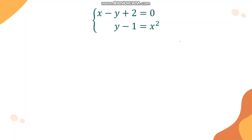For our next example, we have x minus y plus 2 equals 0 and y minus 1 equals x squared. We again have a linear and a quadratic equation, and we will use substitution. Looking at the two equations, it is easier to use equation 2: y minus 1 equals x squared. Moving negative 1 to the other side gives y equals x squared plus 1.